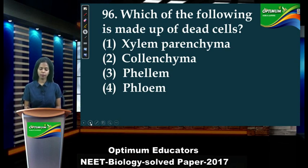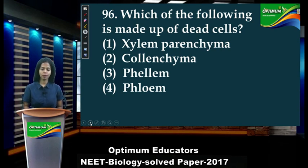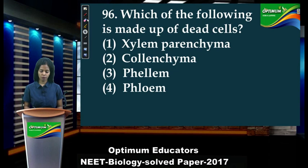Next: 'Which of the following is made up of dead cells?' Xylem parenchyma — no. Collenchyma — no. Phellem — phellem is nothing but dead cork cells, worn-out dead cork cells. Phloem — not at all. So phellem is the answer.